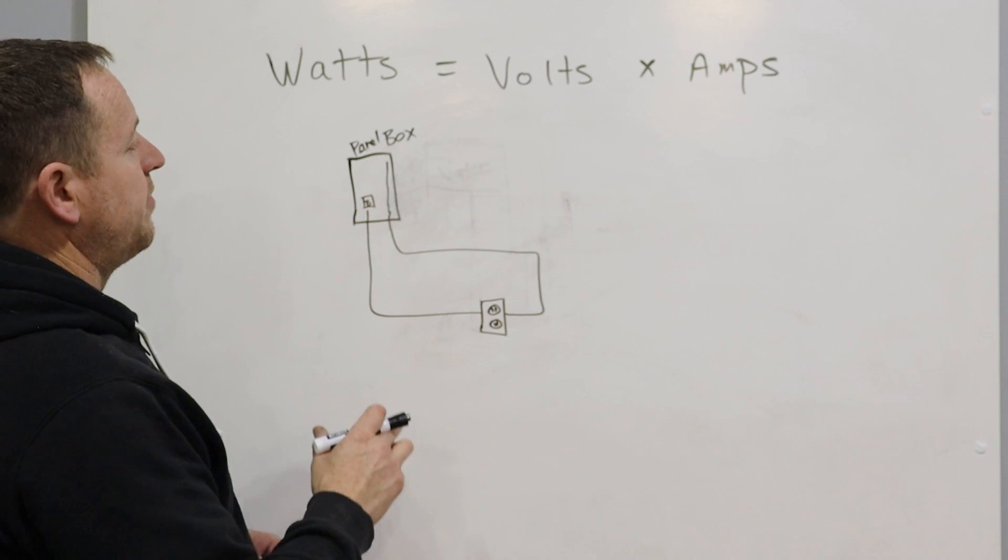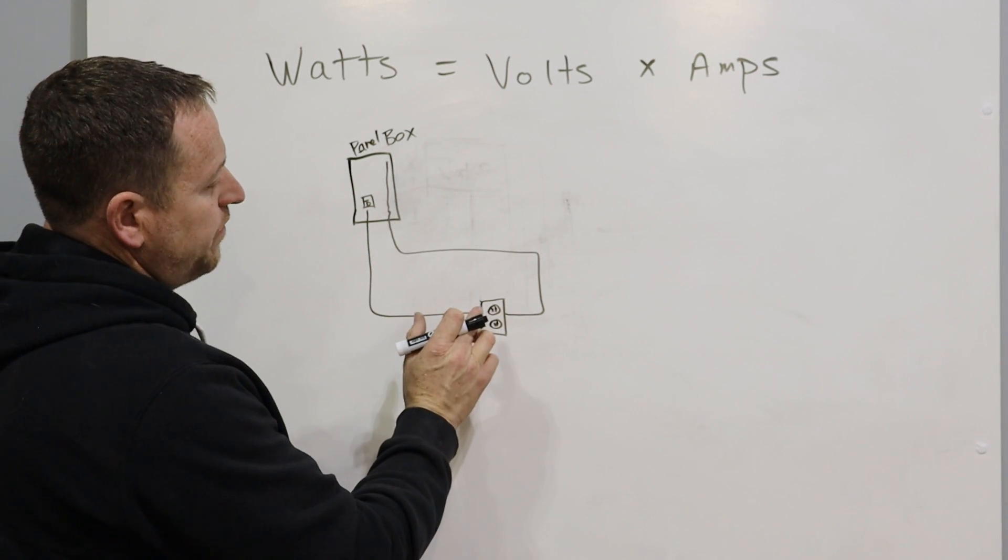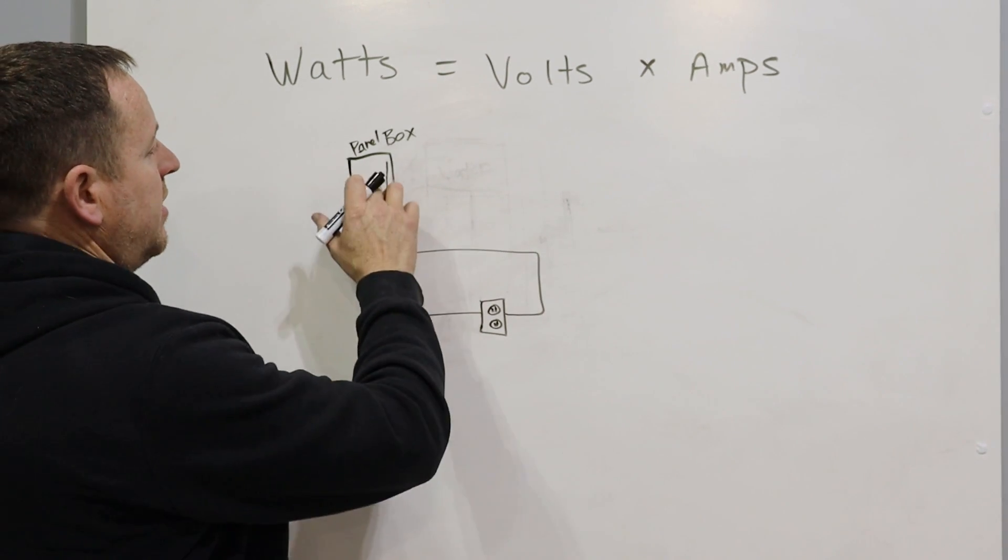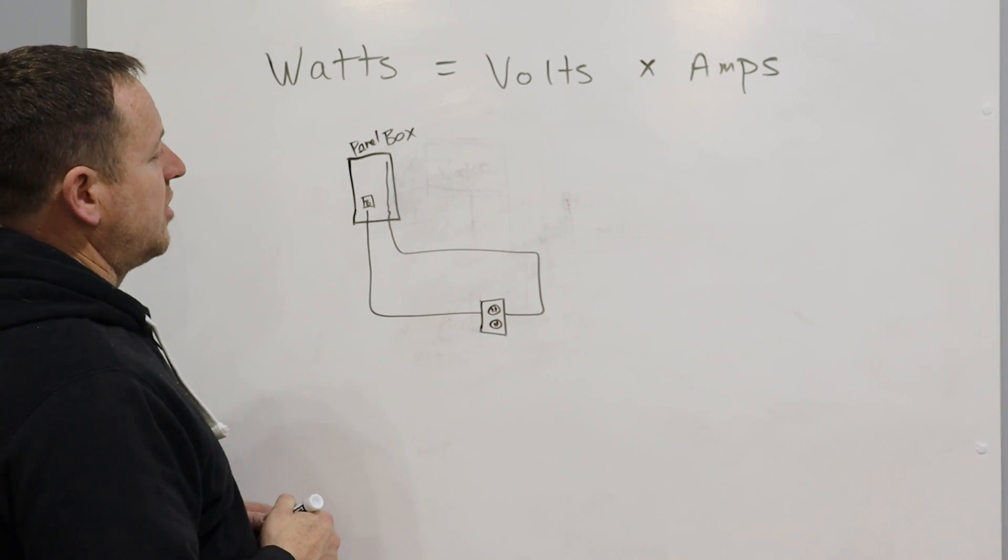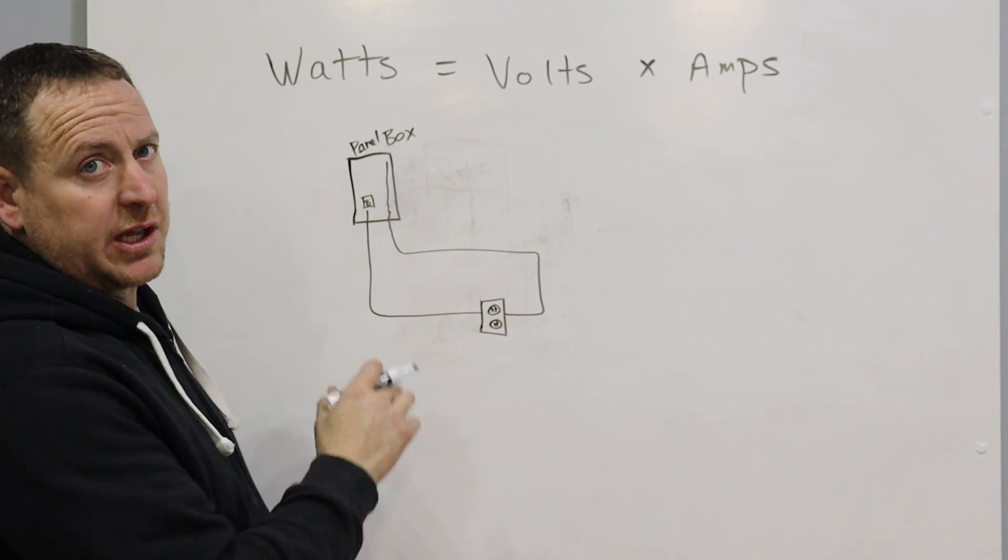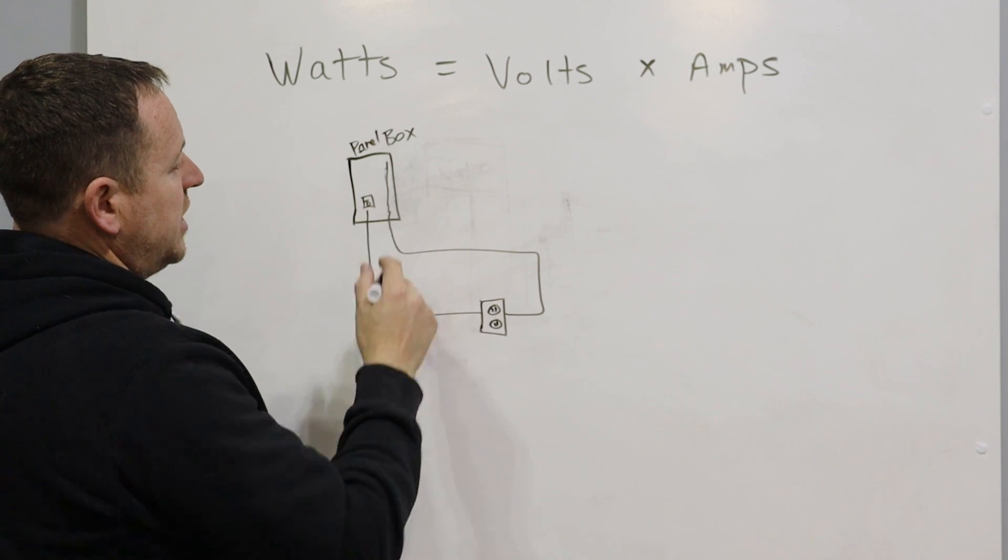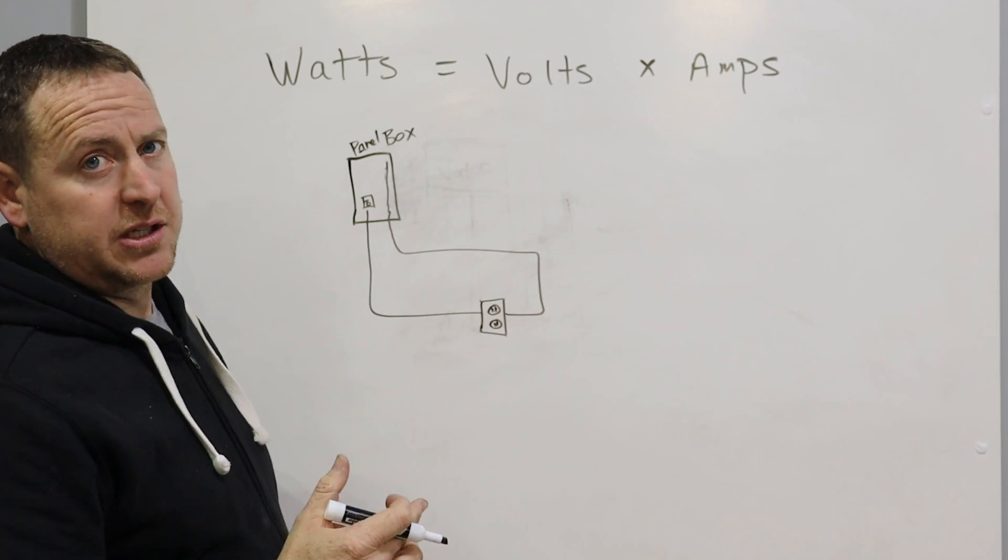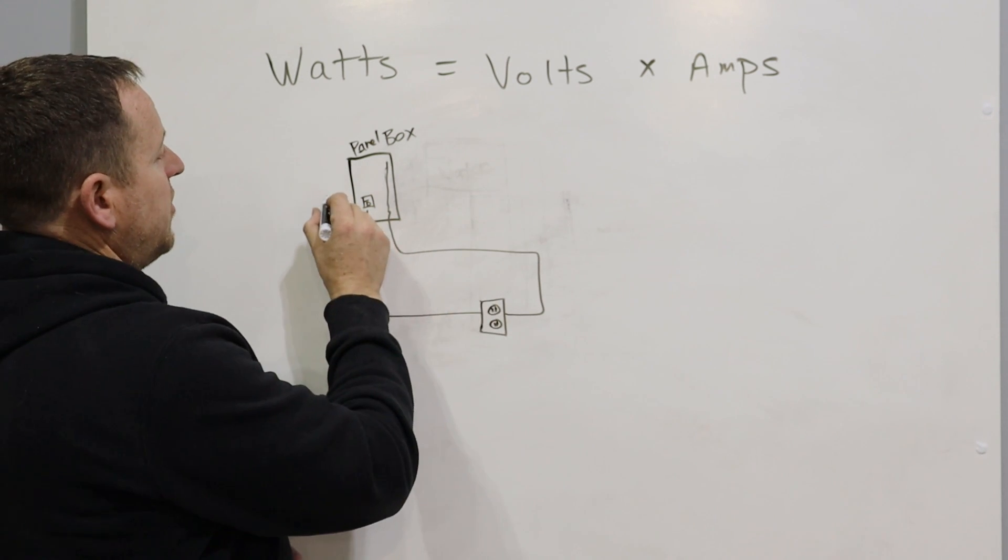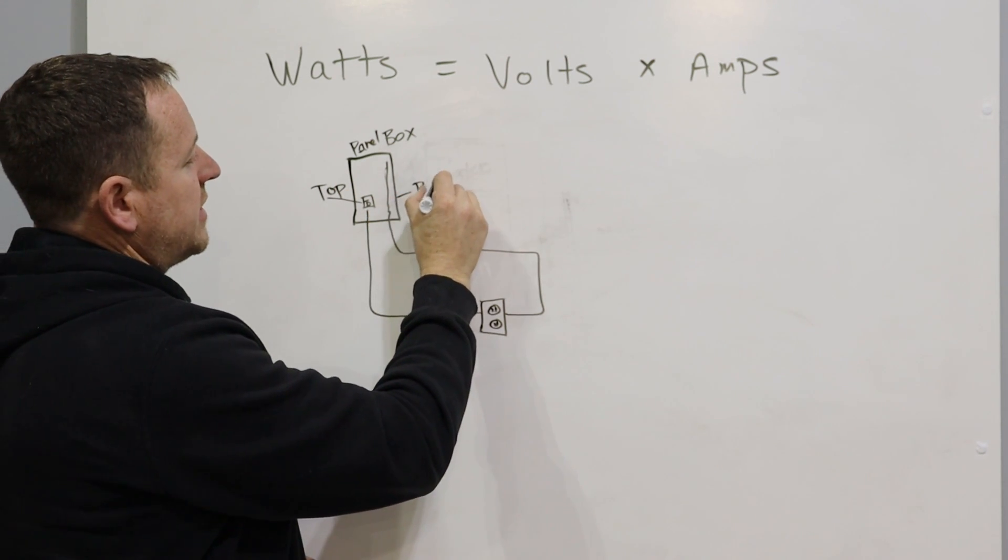So let's look at the AC system in your home. You have a panel box, and you have a wire that comes over to an outlet, and then you have another wire that returns and goes back to your bus bar in your panel box. In our panel box, we have our breaker where the electricity is coming from, and then we have the bus bar, which is where the electrons are returning to. If we're looking at our water tower analogy, this breaker would be the top of the tower, and this bus bar would be the bottom of the tower.